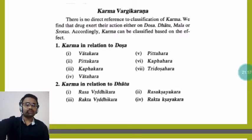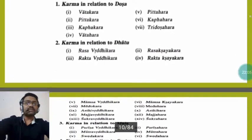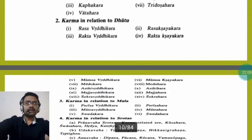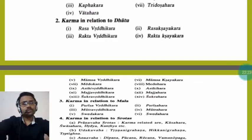The second classification in relation to Dhatu: Rasa Vardhakara, Rakta Vardhakara, Mamsa Vardhakara, Meda Vardhakara, Asthi Vardhakara, Majja Vardhakara, Shukra Vardhakara — and their counterparts — Rasak Kshayakara, Raktak Kshayakara, Mangsak Kshayakara, Medahara, Asthihara, Majjahara, and Shukrahara. These are the classifications of Karma in relation to Dhatu.